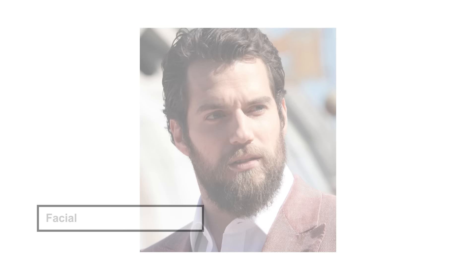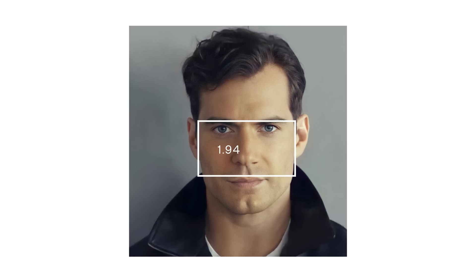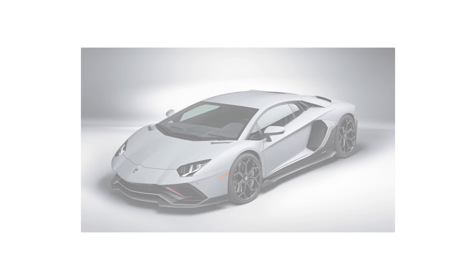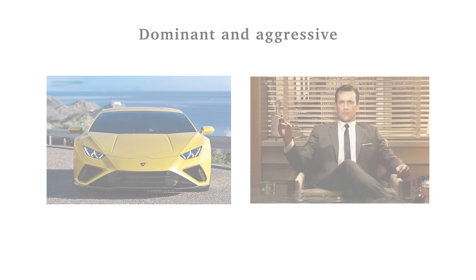Henry's entire midface region is quite compact, with a facial width to height ratio approaching two times, meaning his facial width from zygion to zygion — cheekbone to cheekbone — is almost two times as wide as the height of his midface region. Think of the headlights of a Bugatti or a Lamborghini — wide, narrow and aggressive looking. There's a reason why that tends to look good in masculinised faces, as it looks dominant and aggressive.